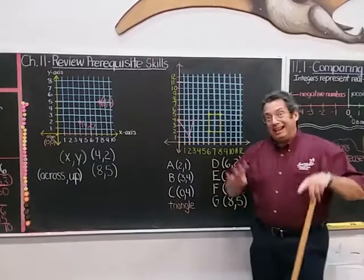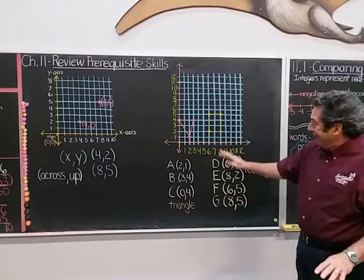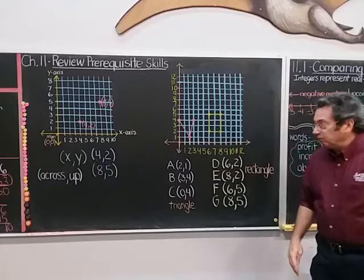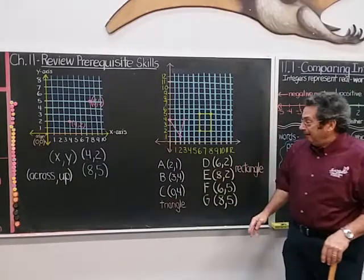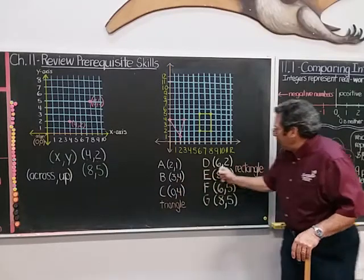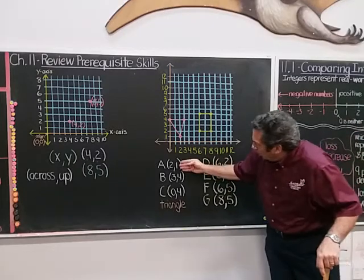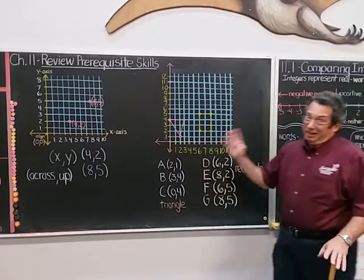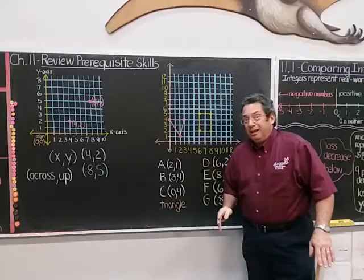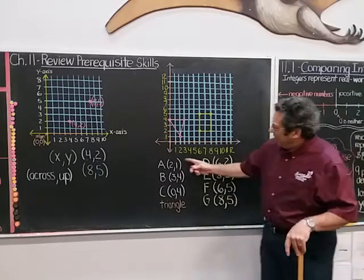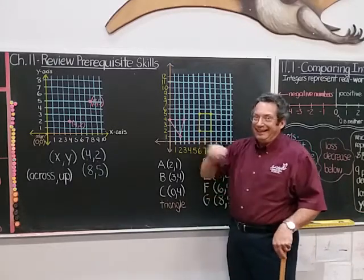Before you get to work on today's prerequisite skills for chapter 11 — this coordinate grid here is a little bigger. I've gone out farther on the x-axis and up on the y-axis, because when I looked at all the coordinates I need to plot, I could see the largest x-coordinate is 8, so I need to go at least out to 8. Looking at the y-coordinates — 1, 4, 4, 2, 2, 5, 5 — I need to go at least up to 5. So by looking at the coordinates before you draw your coordinate grid, you can tell how big you need to make it.